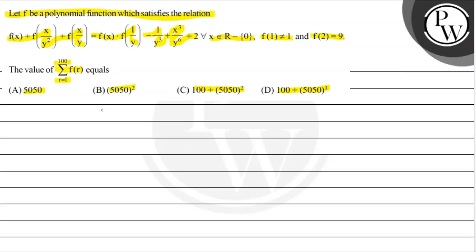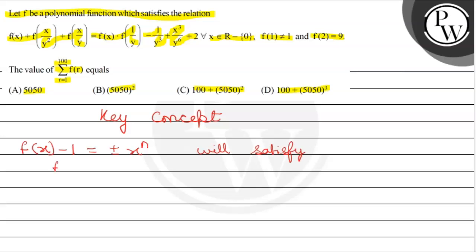Before we start solving the question, let us understand the key concept on which this question is based. The key concept is that for any function f(x) - 1 = ±xⁿ, the polynomial function will satisfy f(x) + f(1/x) equals f(x) multiplied by f(1/x).